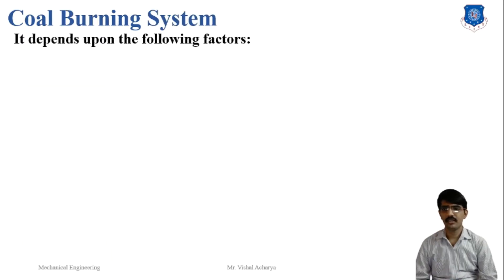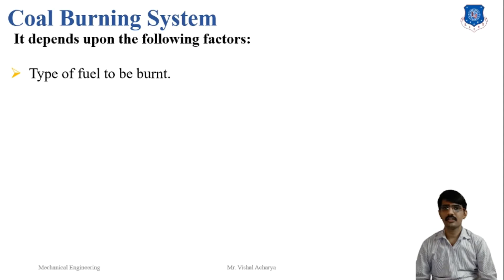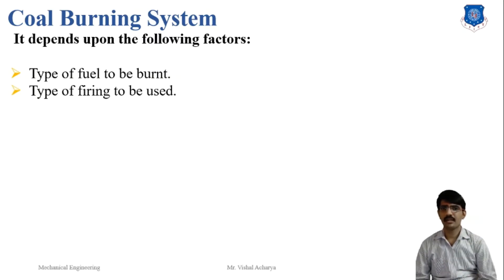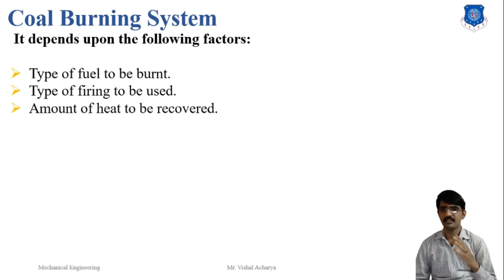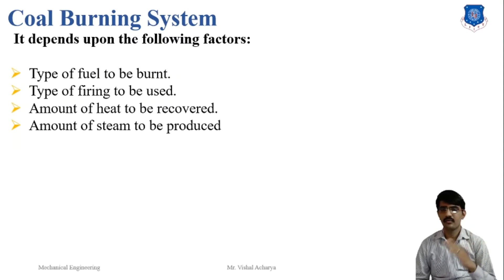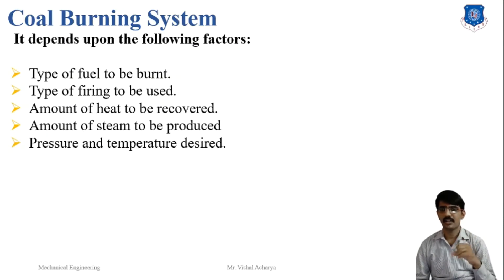Next is the coal burning system. Some factors are required for the selection of the coal burning system. First is the type of fuel to be burned, meaning the calorific value and LCV value of the fuel. Second, the type of firing method to be used — pneumatic burners or stokers. Third, the amount of heat to be recovered and the efficiency of the heat recovering system. Fourth, the amount of steam to be produced, which is converted from chemical energy into heat energy as a percentage of thermal efficiency. Fifth, the pressure and temperature required for the design of the furnace.